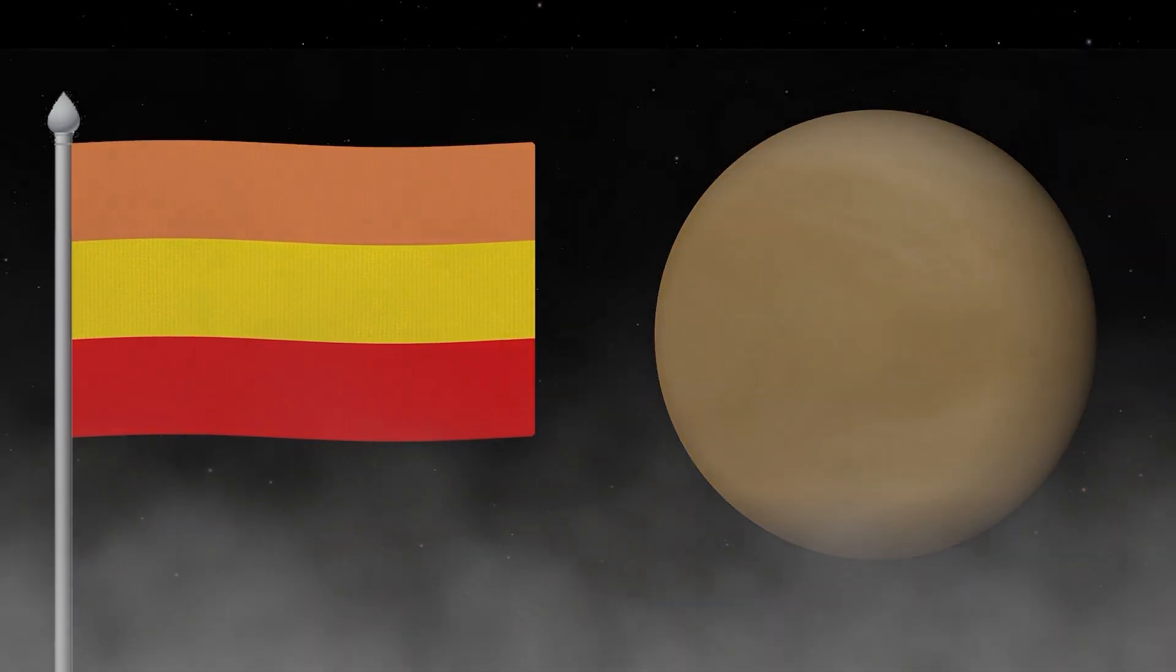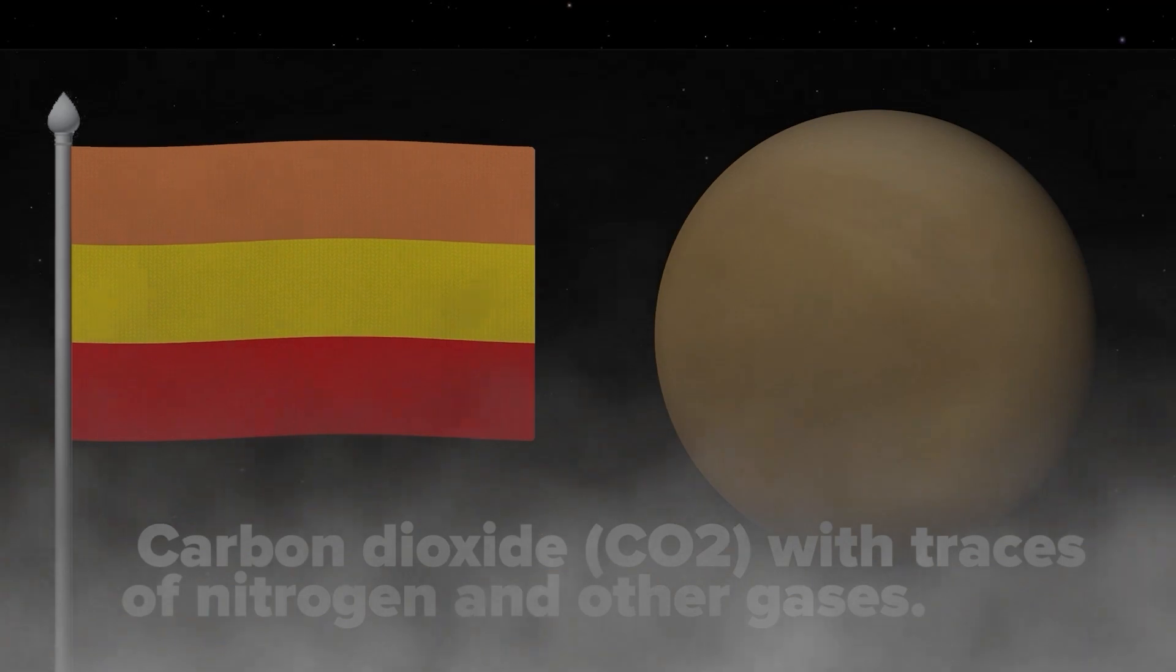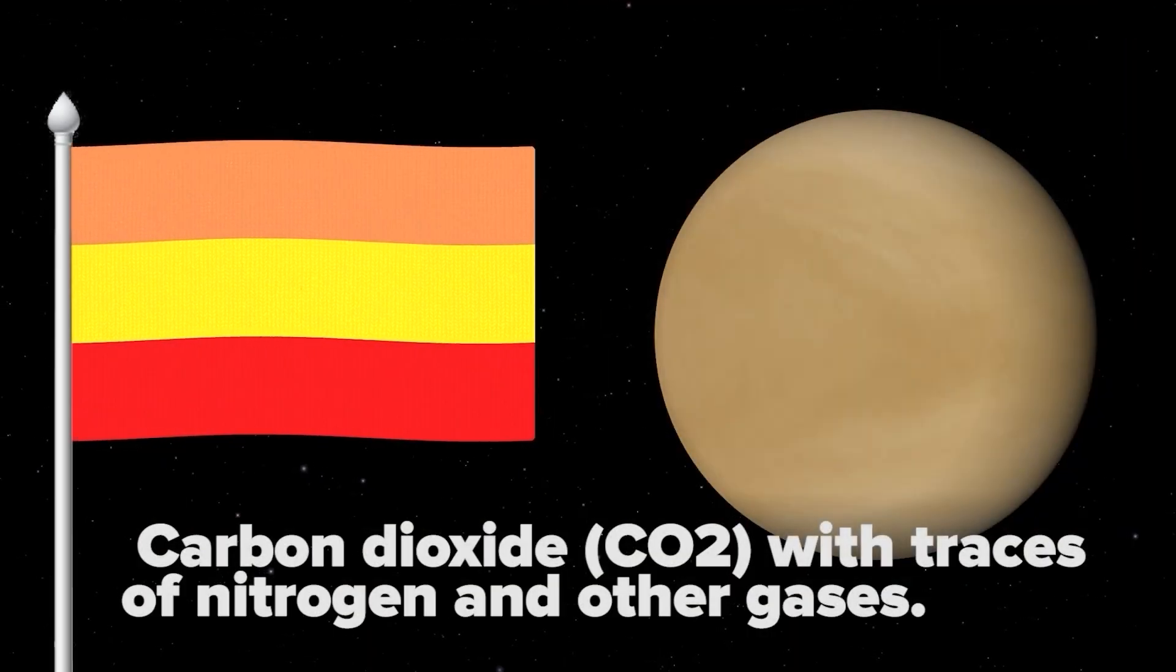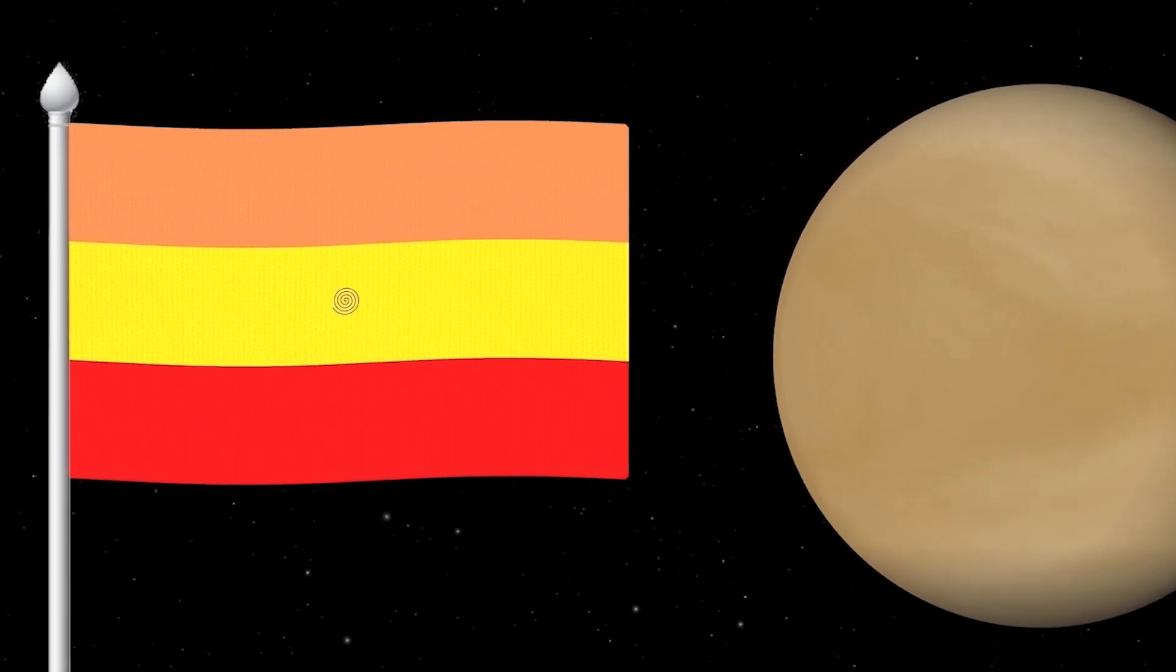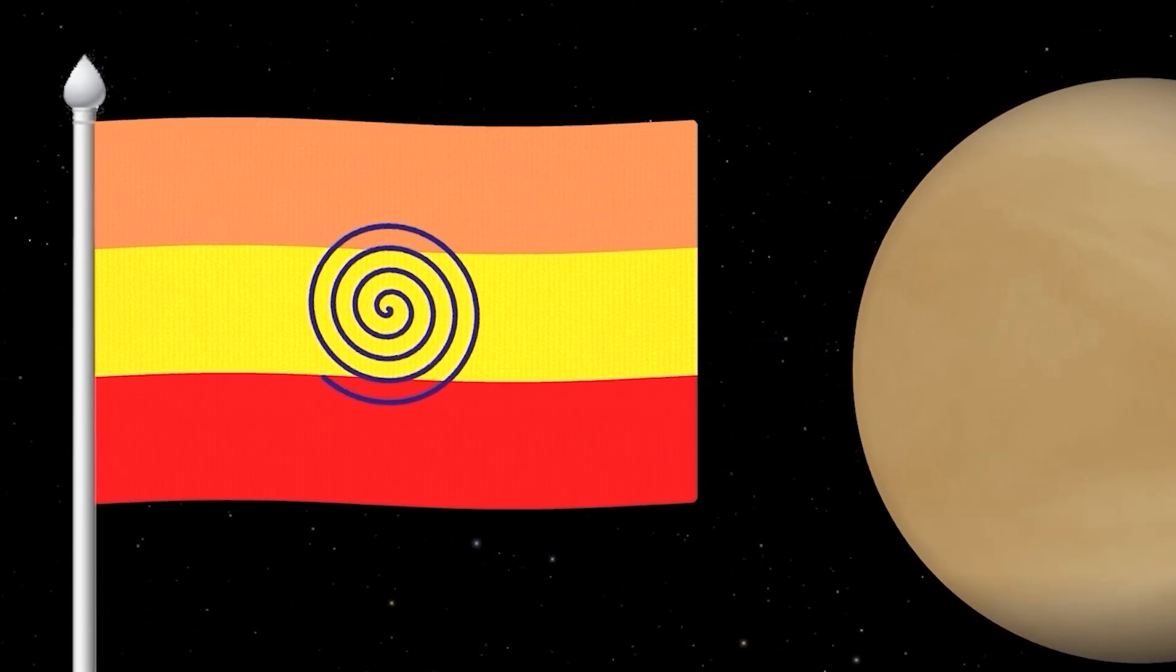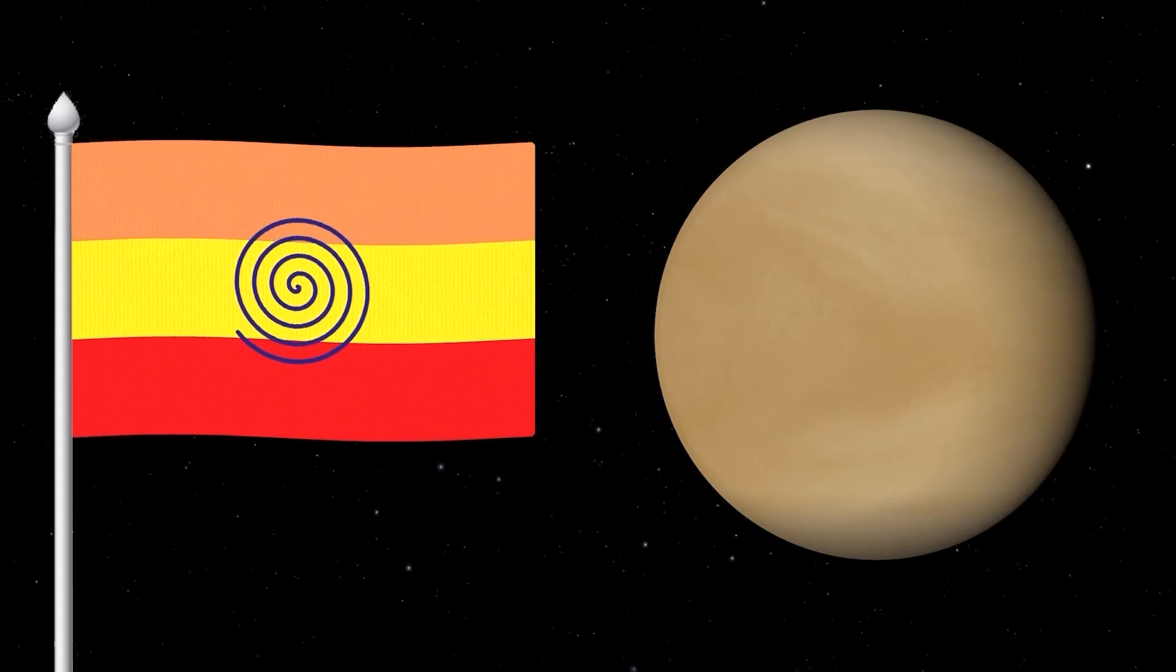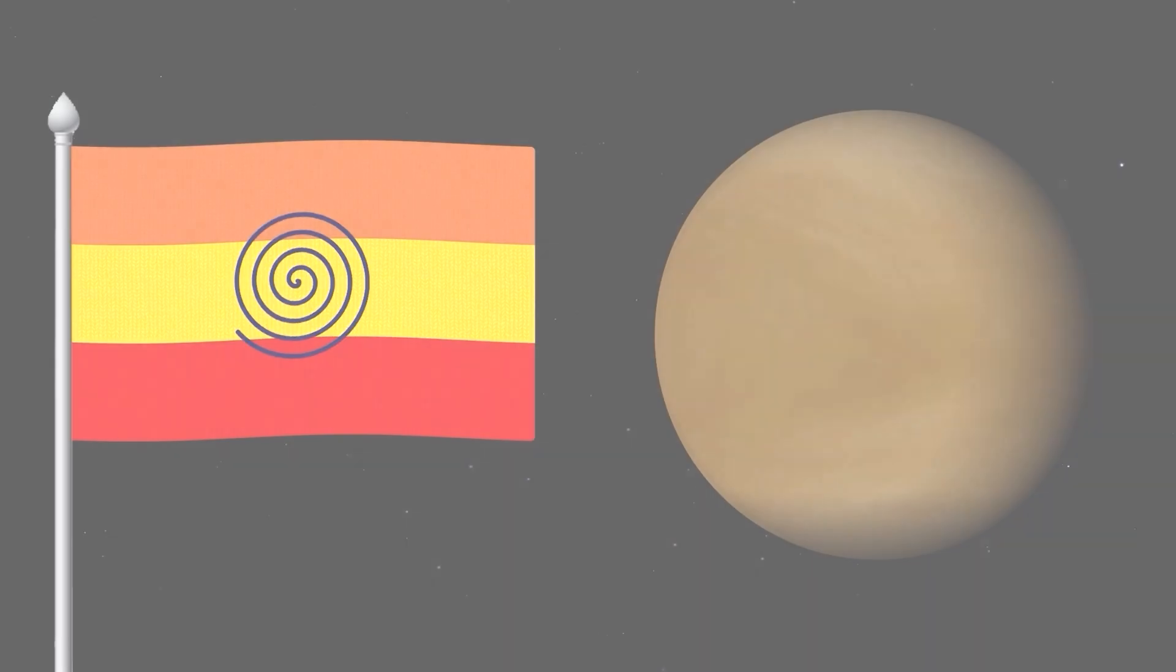Venus has a thick and dense atmosphere consisting mostly of carbon dioxide, CO2, with traces of nitrogen and other gases. So let's picture a spiral in the center of the flag that shows the dense atmosphere of the planet. And so we have a magnificent flag which conveys many things about Venus itself.